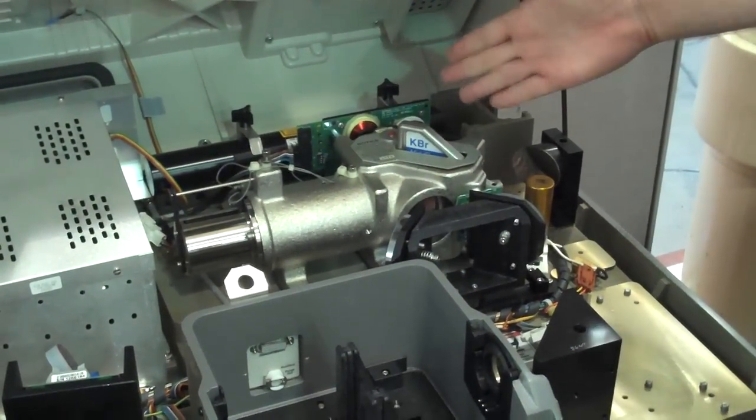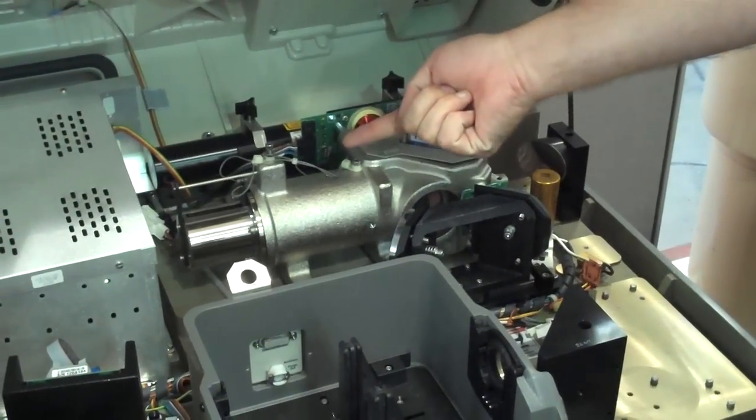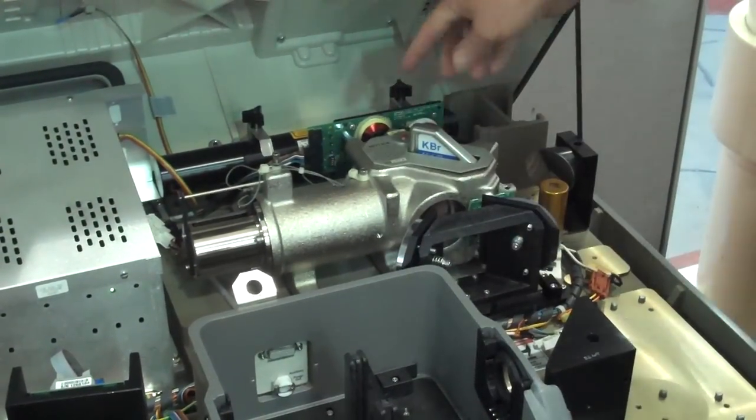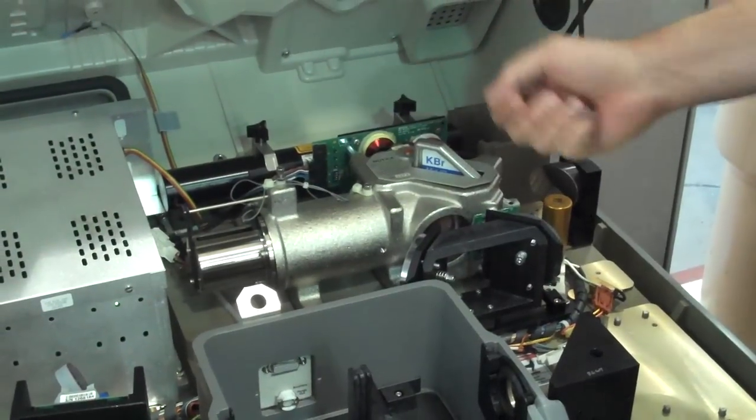This is where the light is split into two parts. There's a beam splitter. Part of the light goes one way, part of the light goes the other way. Then it gets recombined. The interference pattern of that is what we then measure.